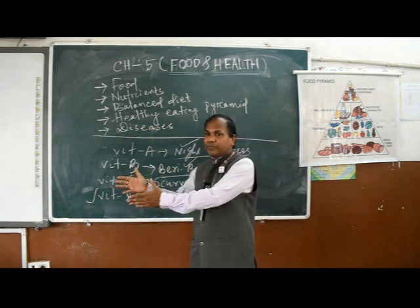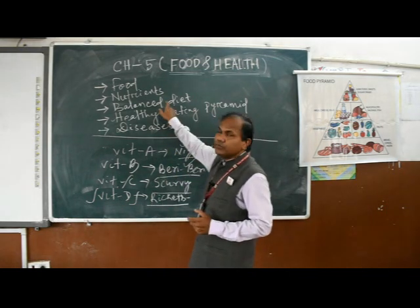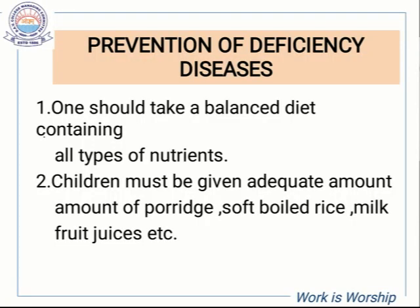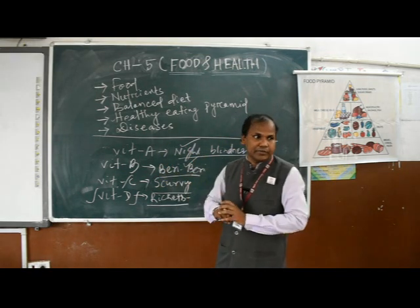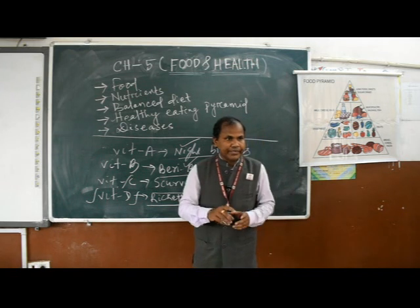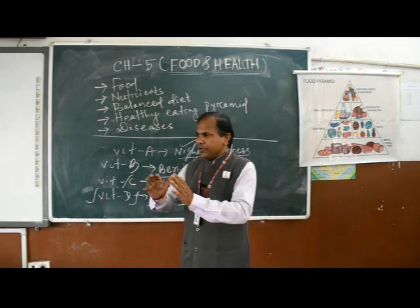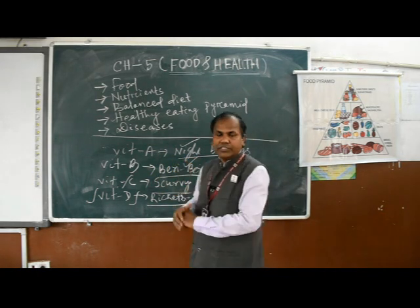To avoid all such deficiency diseases, remember three things: first, take a balanced diet — that is very important; second, adopt healthy eating habits — whatever food you take should be balanced and in a proper amount; third, give children plenty of milk and milk products, along with soft boiled rice, juice, and foods rich in protein.